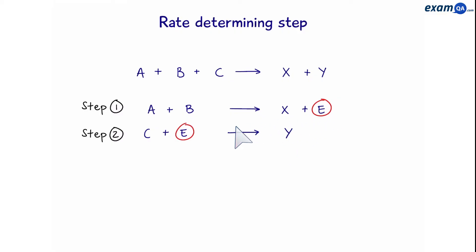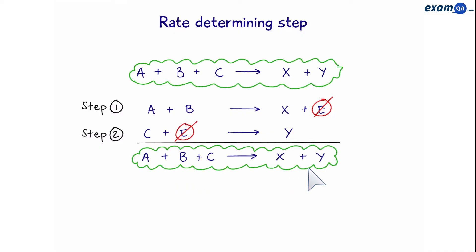That's right, it's an intermediate which is created, however, it gets used quickly as well. That means when we add the two reactions, we should still get A plus B plus C on the left, and X plus Y on the right, exactly as we had above.